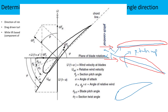When talking about twist angle or pitch angle in a wind turbine, the positive angle always goes towards the incoming wind direction. When you rotate the wind turbine aerofoil from the plane of rotation towards the incoming wind direction, you are giving it a positive pitch angle.